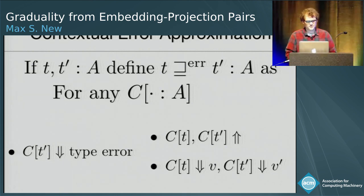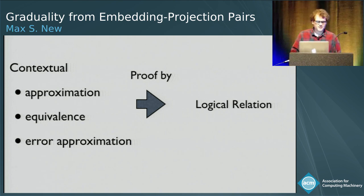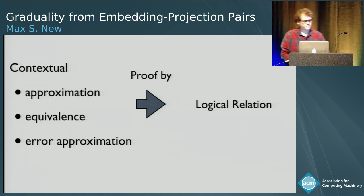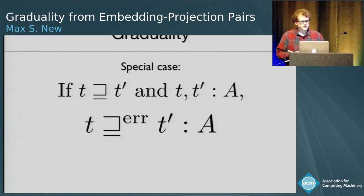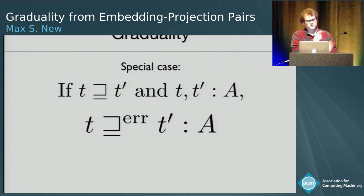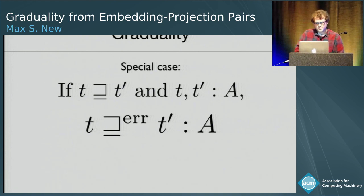We define an ordering on two terms of the same type A, and say T prime error-approximates T if for any program context — a program with a hole that can be filled in by programs of type A — if plugging T prime into the context reduces to a type error, then nothing is said about T; otherwise, they both diverge or they both terminate. So they're ordered by this ordering on effects. I've just restated the earlier property — but the trick is, if you can state your property as a contextual something, then you can use proof by logical relation.